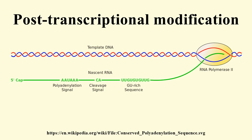This process is vital for the correct translation of the genomes of eukaryotes, because the primary RNA transcript produced as a result of transcription contains both exons, which are coding sections of the primary RNA transcript, and introns, which are the non-coding sections of the primary RNA transcript. The pre-mRNA molecule undergoes three main modifications.